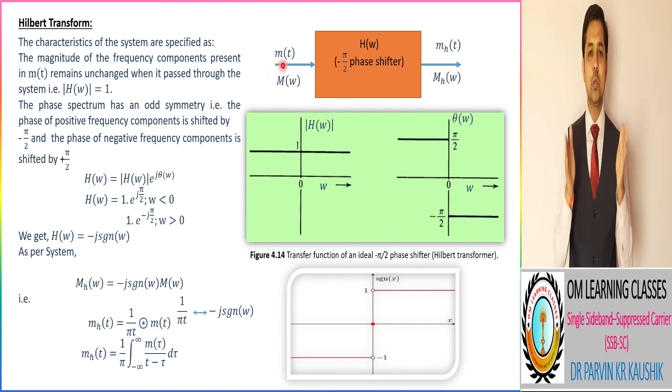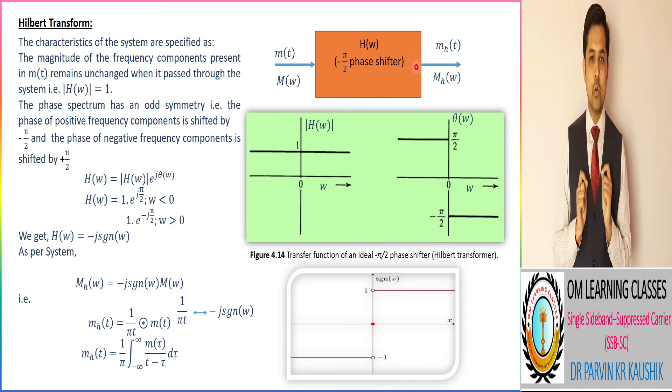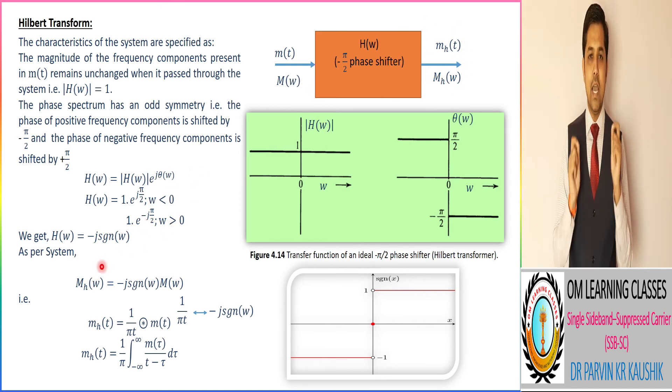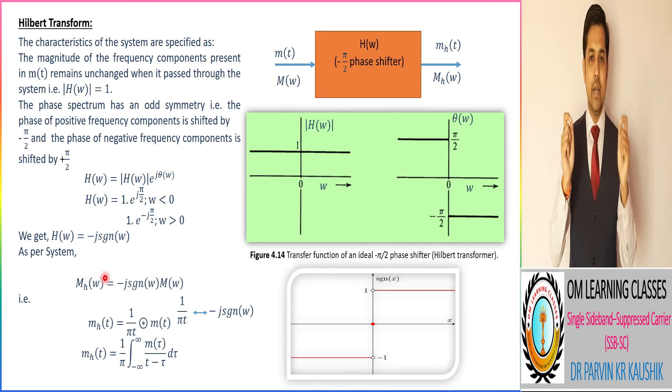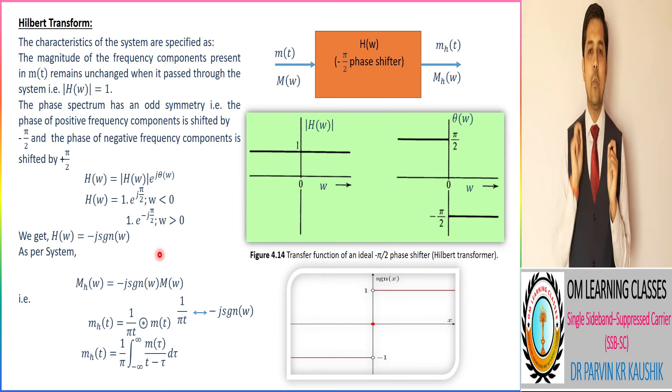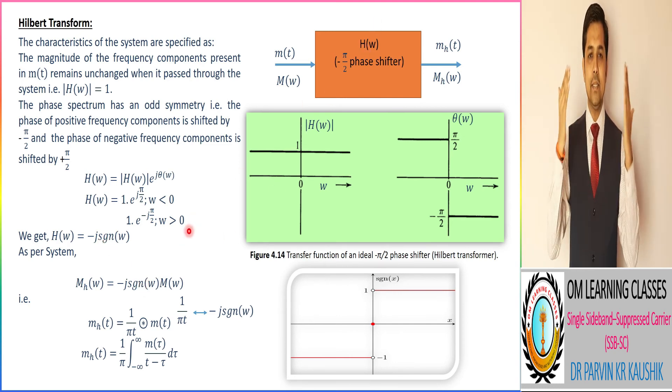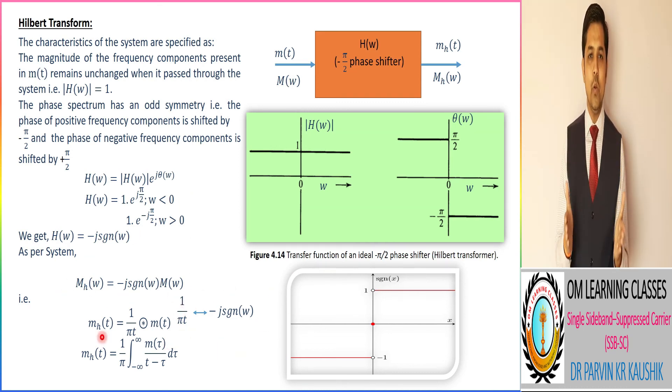Corresponding to their frequency domain, both signals are multiplied. So we get the output signal, that is M_H(ω), is equivalent to minus j sgn(ω) into M(ω). And by taking its inverse transform, we get the m_H(t) signal, which is equivalent to 1 by πt convolution with m(t) signal.